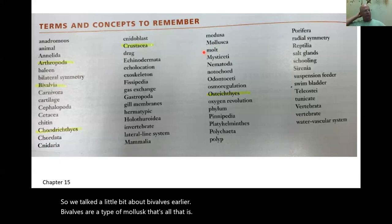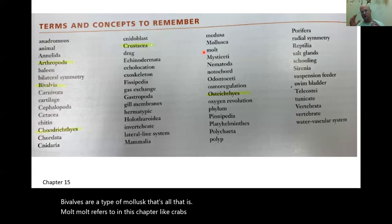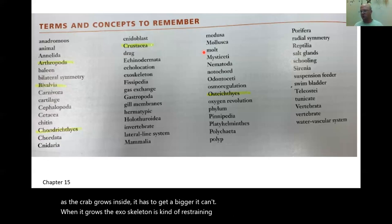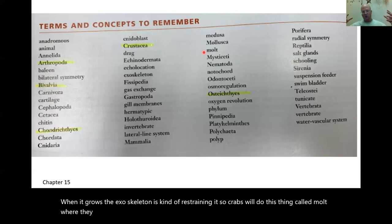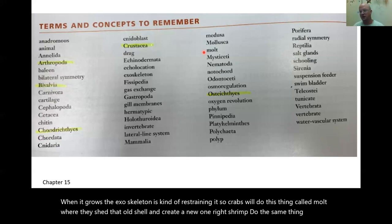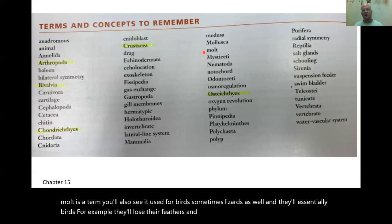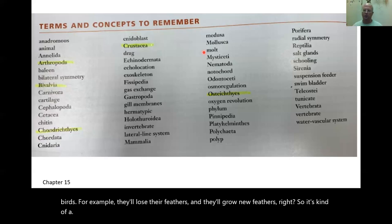Molt refers to, in this chapter, what crabs do. As a crab grows, its hard shell restrains it, so crabs shed the old shell and create a new one — that's molting. Shrimp do the same thing. Molt is also used for birds, which lose and grow new feathers, and lizards as well.